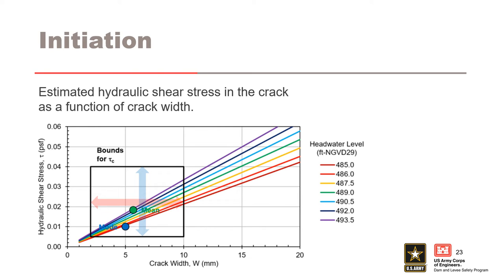The multicolored series of lines are the hydraulic shear stress as a function of crack width for different reservoir levels. In this case history, the reservoir levels of interest range from the peak reservoir elevation of 493.5 to elevation 485, which was the entrance location of the pipes. The rectangular box bounds the estimates of crack width, shown by the red arrows, and the critical shear stress for the embankment, shown by the blue arrows. The critical shear stress can be informed by the erodibility parameters toolbox, and the crack width by the concentrated leak erosion crack width and depth toolbox. Initiation of erosion is assumed to occur when the critical shear stress is exceeded.